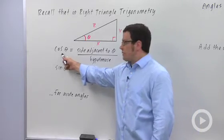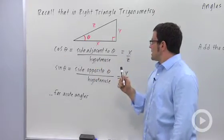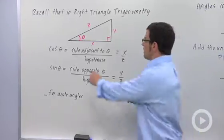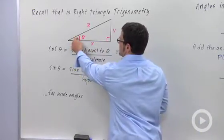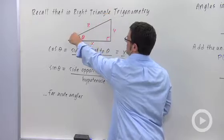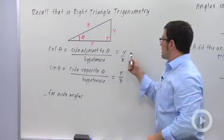We defined cosine of theta to be the side adjacent to theta divided by the hypotenuse. And by adjacent, we mean the side that's next to theta. This is the hypotenuse, the long side of the right triangle. And so that means x over z.